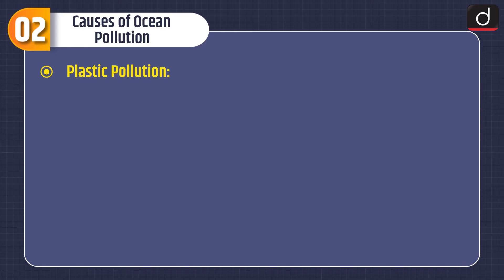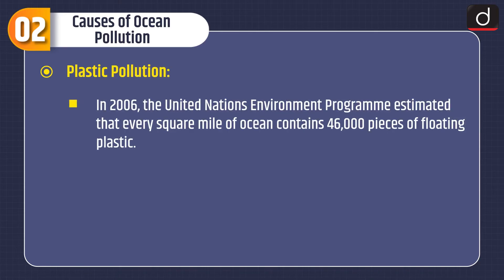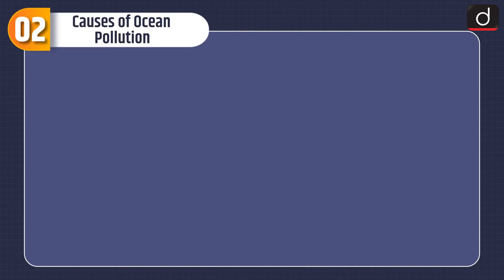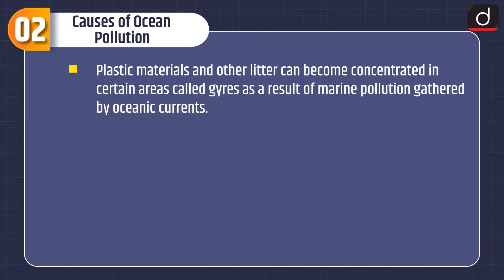Next is plastic pollution. In 2006, the United Nations Environment Programme estimated that every square mile of ocean contains 46,000 pieces of floating plastic. Once discarded, plastics are weathered and eroded into very small fragments known as microplastics. These, together with plastic pellets, are already found on most beaches around the world. Plastic materials and other litter can become concentrated in certain areas called gyres, as a result of marine pollution gathered by oceanic currents.